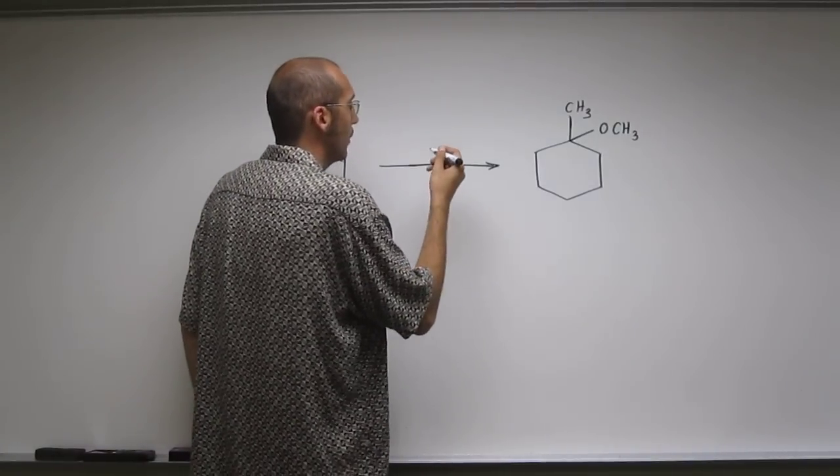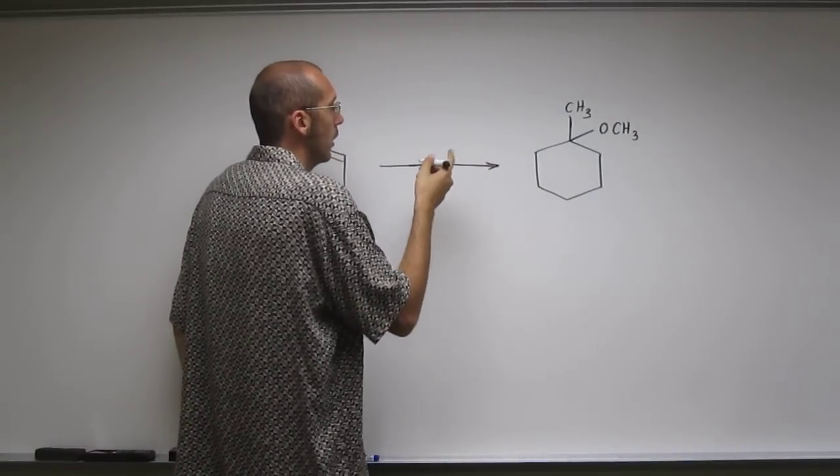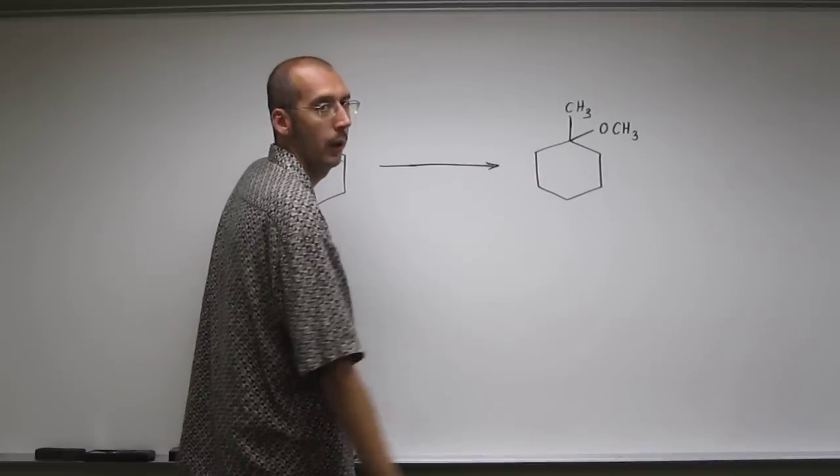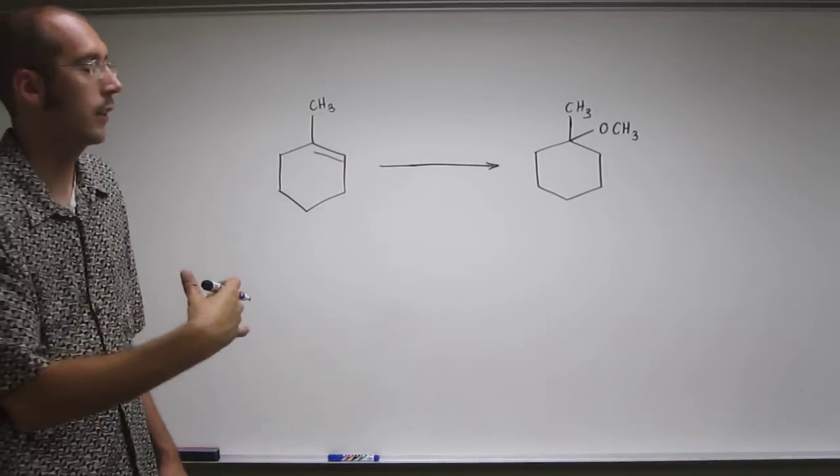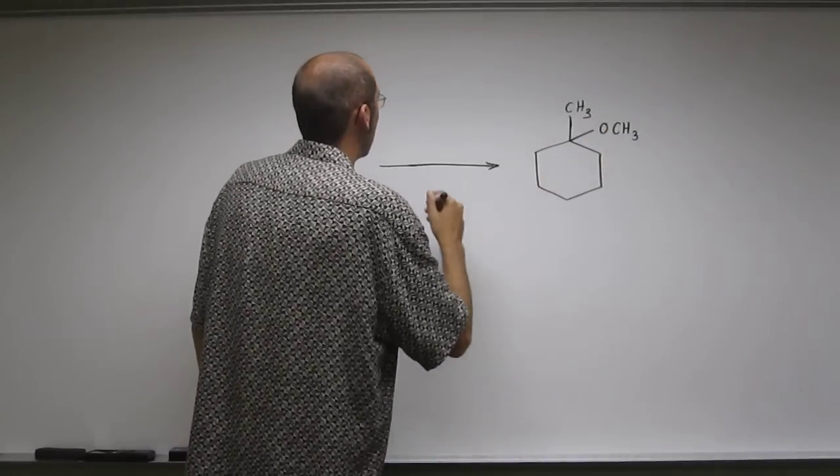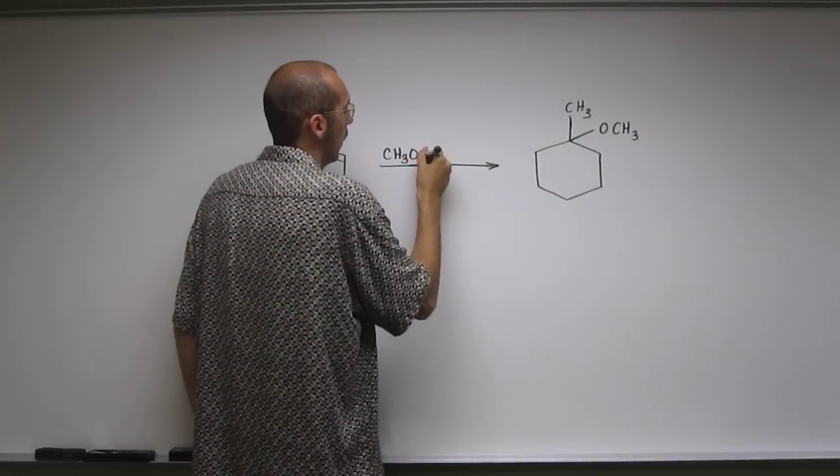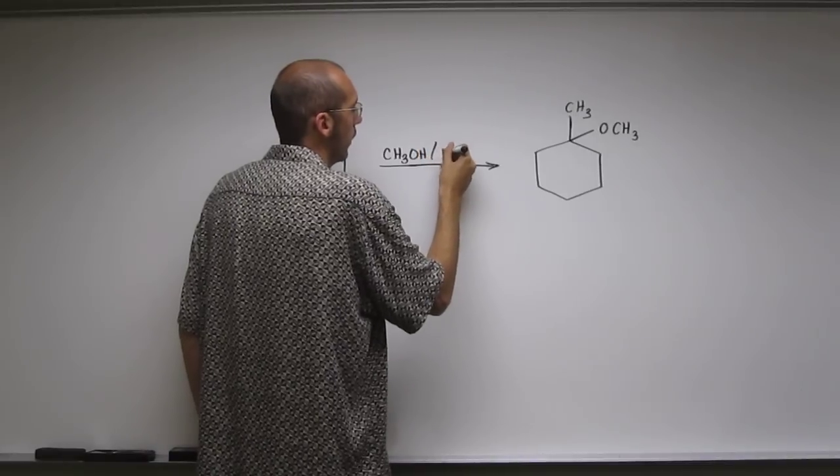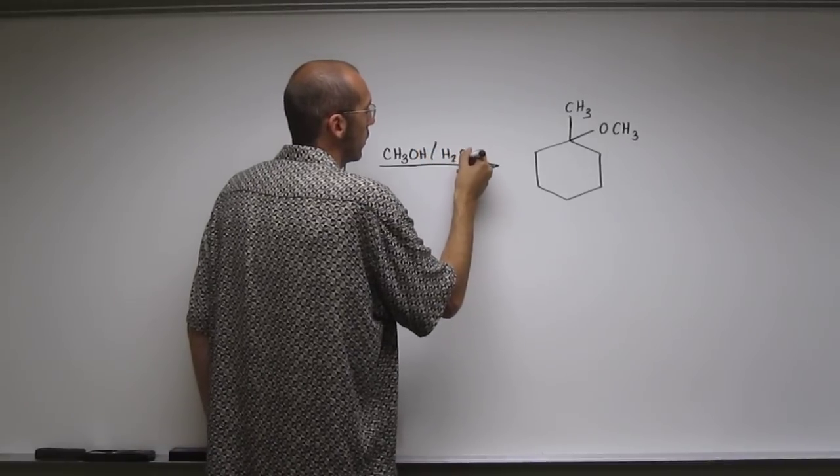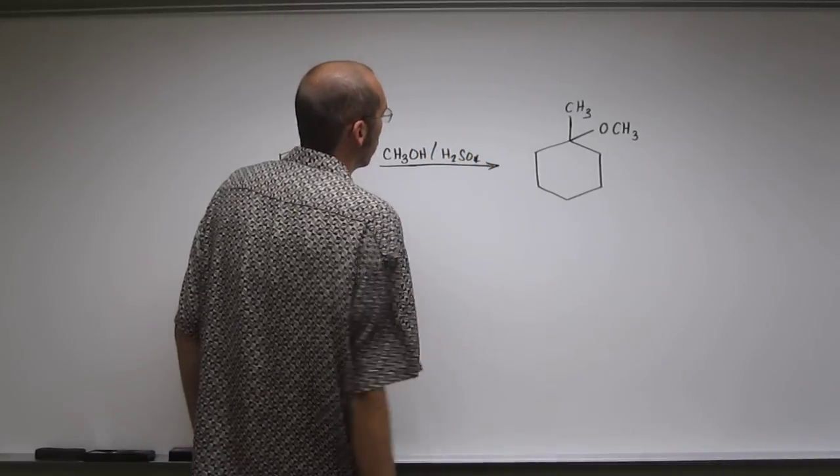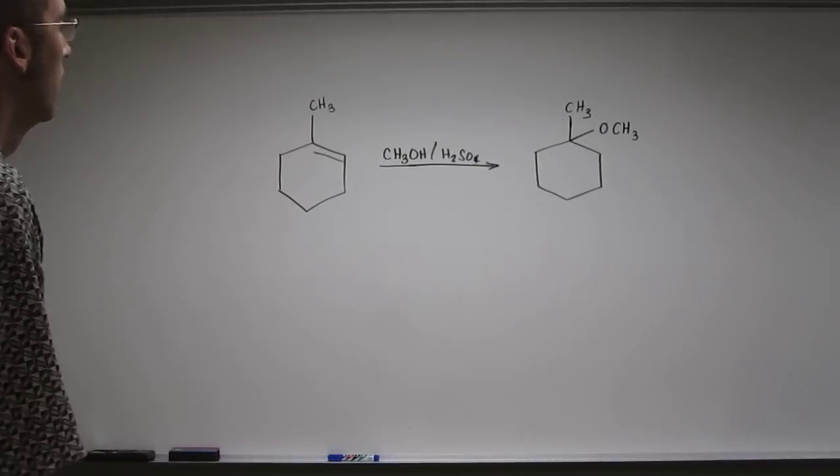How do you do that? Well, you're going to have to use the alcohol that corresponds to that alkoxide. In this case, since that's methoxy, you're going to have to use methanol and H2SO4, or some proton source.